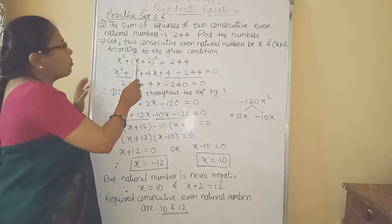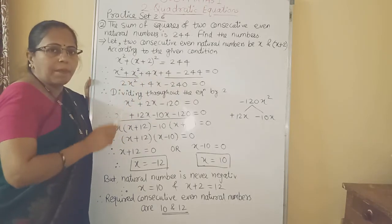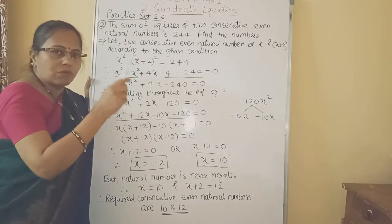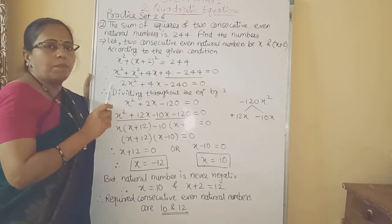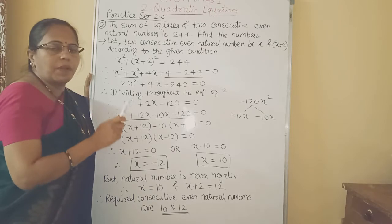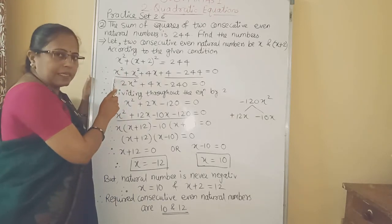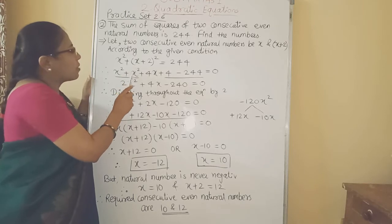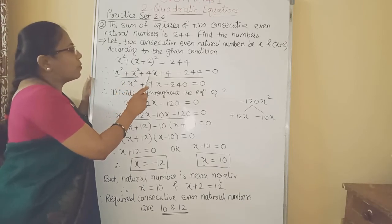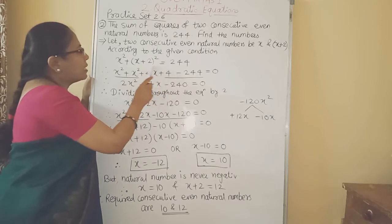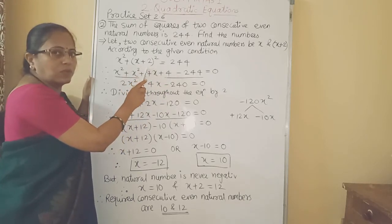Now here we have to expand this bracket using the formula a plus b the whole square equal to a square plus 2ab plus b square. x square is as it is plus, so according to the formula here we will get x square plus 4x plus 4. This is the square of bracket x plus 2.